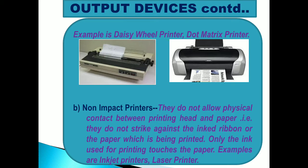Non-impact printers do not allow physical contact between the printing head and the paper — they do not strike against an inked ribbon or the paper. Only the ink used for printing touches the paper. Examples are Inkjet printers and Laser printers.